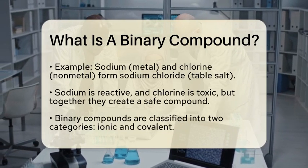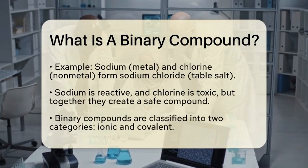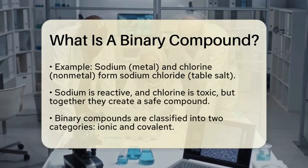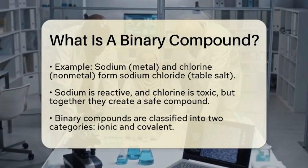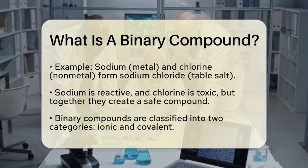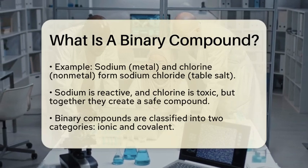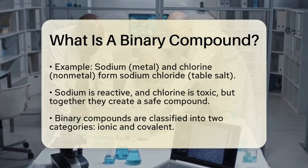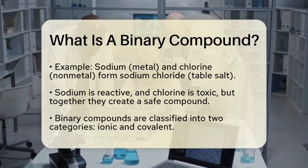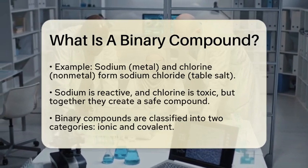For example, when sodium, a metal, combines with chlorine, a nonmetal, they create sodium chloride, commonly known as table salt. This compound has properties that are different from those of sodium and chlorine on their own.